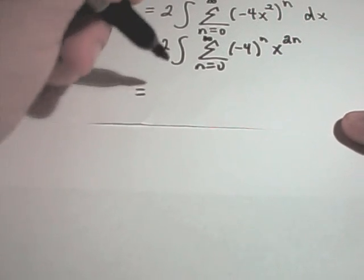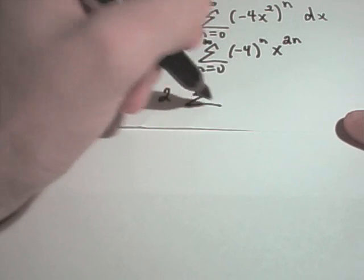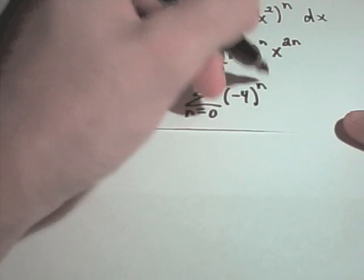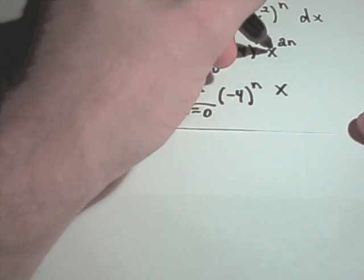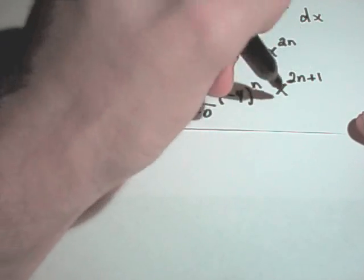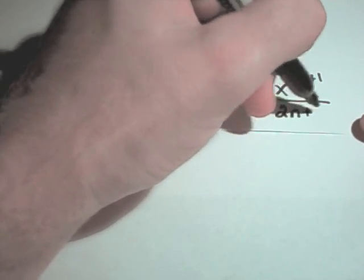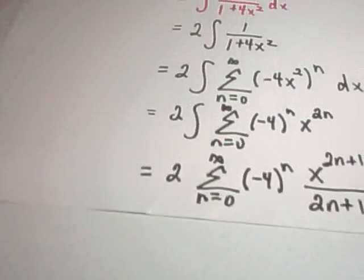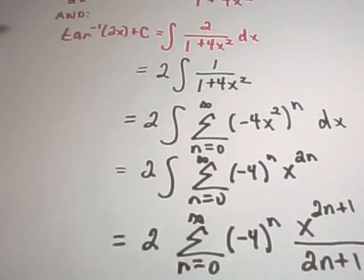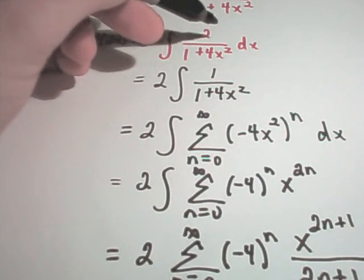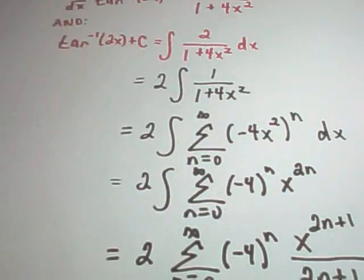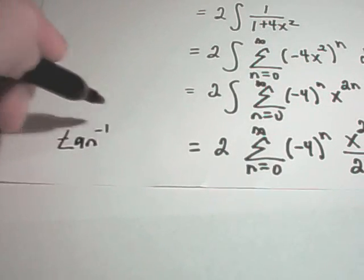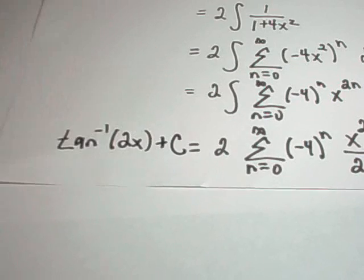I'm going to get 2 times the summation from n equals 0 to infinity. Negative 4 to the n is just a constant. When I integrate, remember you add 1 to the power, so I'll get x to the 2n plus 1, and I'll divide by this new power, 2n plus 1. And this is now a power series representation. We said if we integrate this thing — which is what we did, we integrated it in power series form — it says that's going to be an equivalent expression for arctangent of 2x plus c.